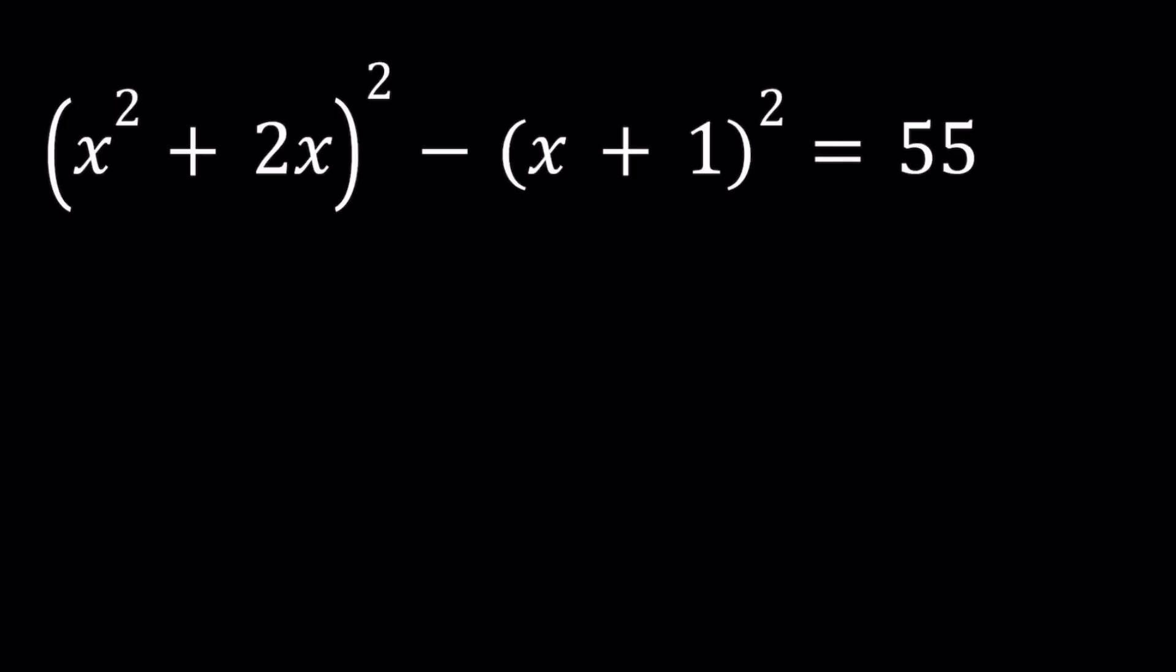So here's what I'm going to do instead. I'm going to expand everything, and that's going to give me a quartic equation. Let's go ahead and do that. So if you square x² + 2x, you're going to get x⁴ + 4x³ + 4x². And then you can also factor out x and square it that way if you want, or just square it like a plus b. Minus,